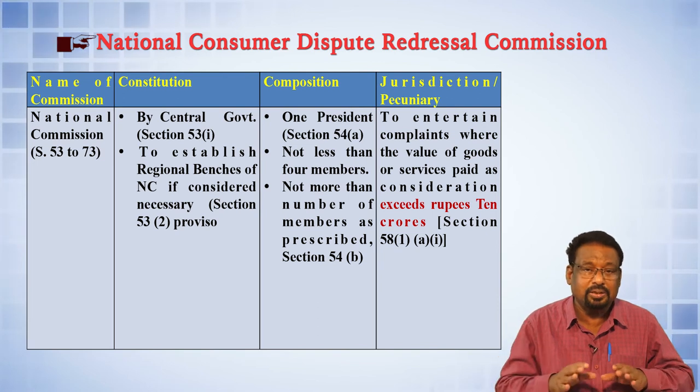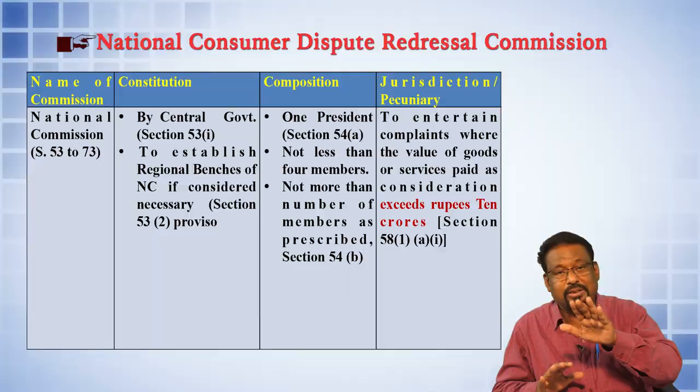In the case of the district commission, there is no provision for appellate jurisdiction. Appellate jurisdiction means when a competent court has given its decision or verdict and the aggrieved person is not satisfied, they have the right to prefer an appeal against the judgment of that court. The state commission will have original jurisdiction for cases up to ten crores and also appellate jurisdiction over decisions given by the district commission. Similarly, the national commission will have original jurisdiction for goods or services beyond ten crores and also jurisdiction to decide appeals based on decisions given by the state commission.